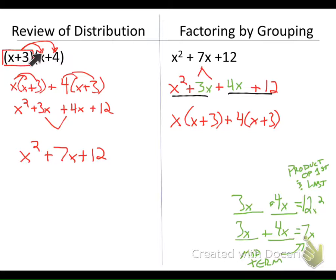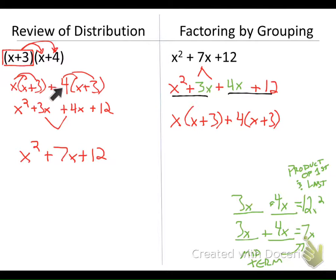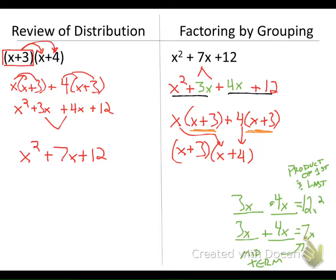We're now one step away from completing the factoring. We can see that x plus 3 is common in both terms. So we factor that out to the front — we undistribute the x plus 3 — leaving us with x plus 4 in the other parentheses. Our final factored answer is (x plus 3)(x plus 4).